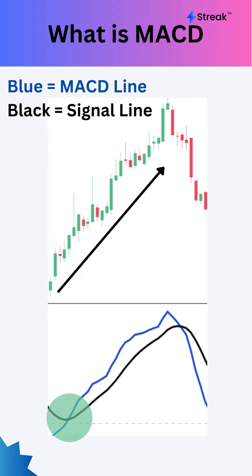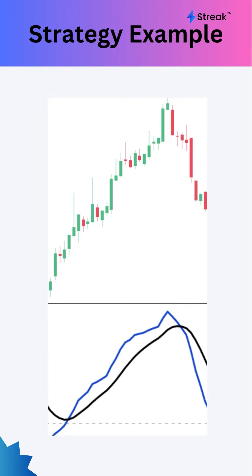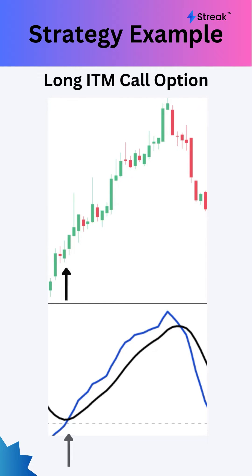MACD crossing above the signal line is an indication of bullishness, and MACD crossing below the signal line is an indication of bearishness. Using a simple strategy, we'll learn how we can create and backtest an option strategy to buy an in-the-money call option whenever MACD crosses above the signal line on the Nifty index.